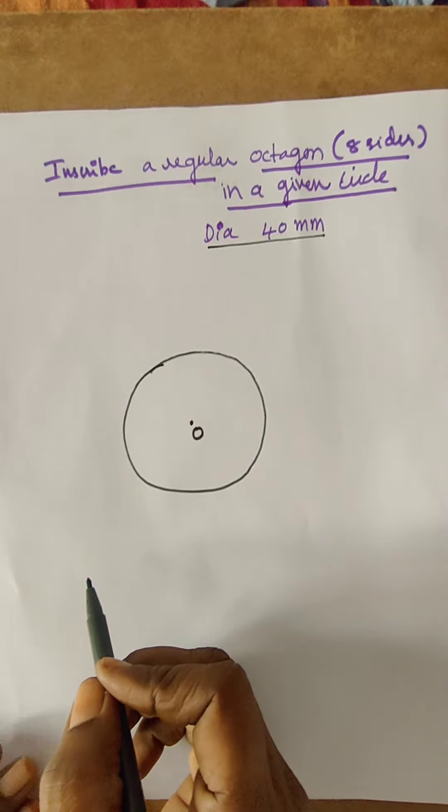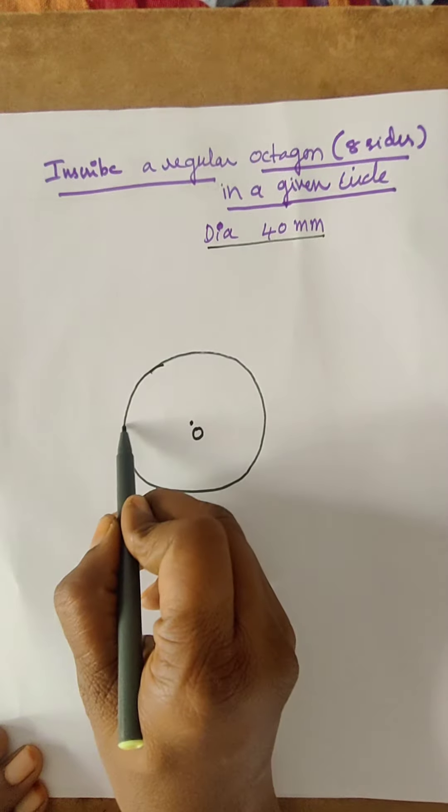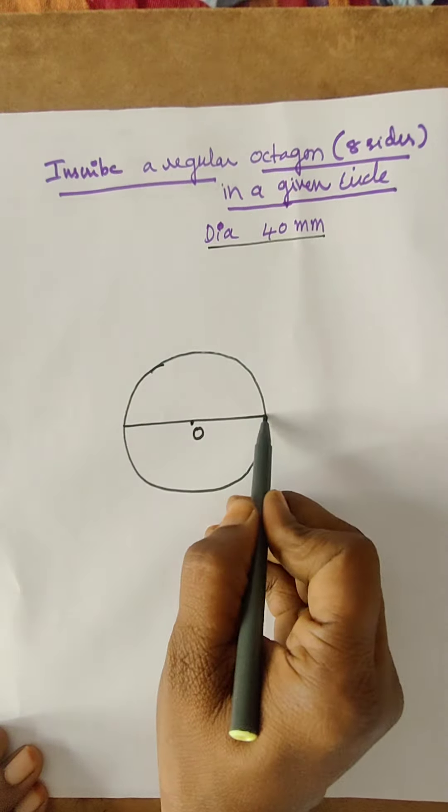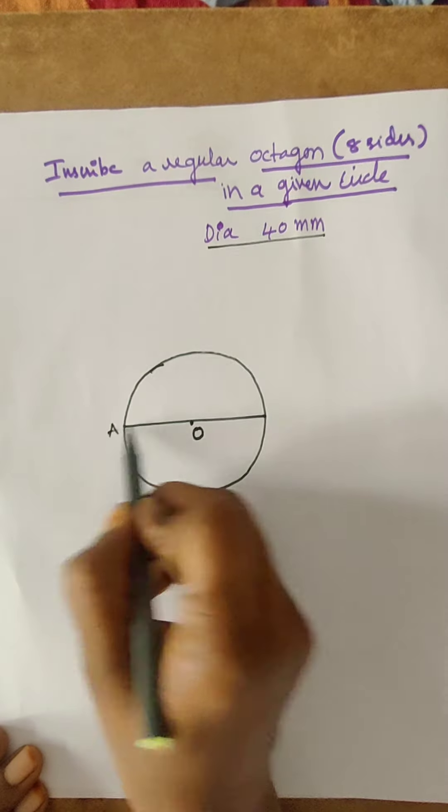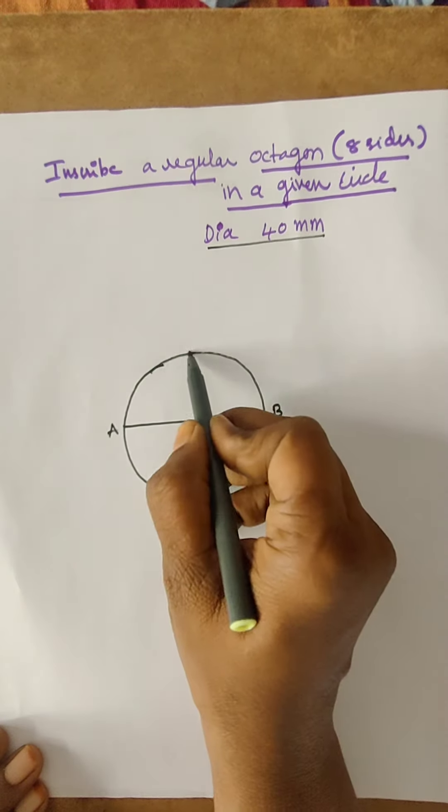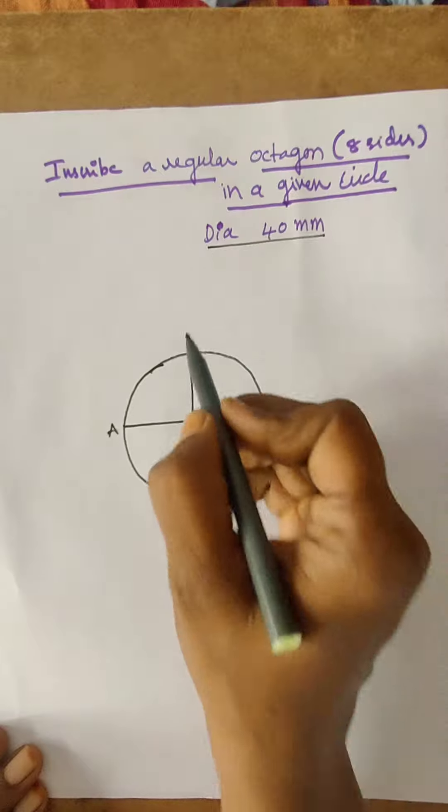Draw a circle with the given diameter. Next, draw diameters, horizontal diameter called AB and vertical diameter called CD.